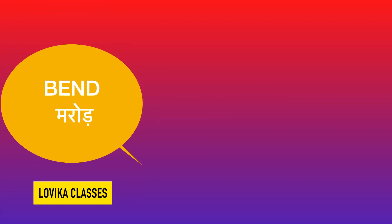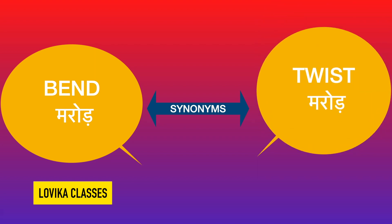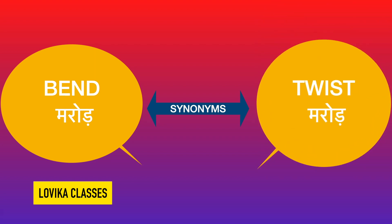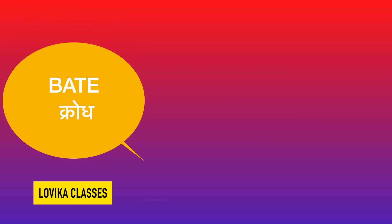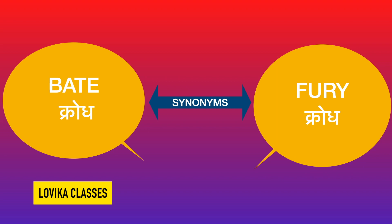Bend means marod — pohlete mein bend aana, means twist aana, ya marod. Bait means krodh. Its synonym is fury, also meaning krodh. Anger is also another word we can use in place of bait or fury.